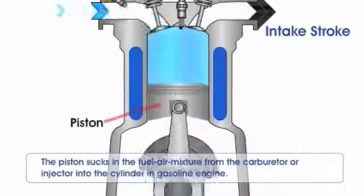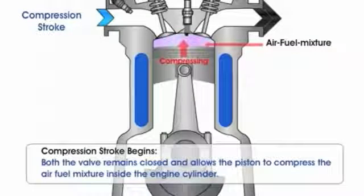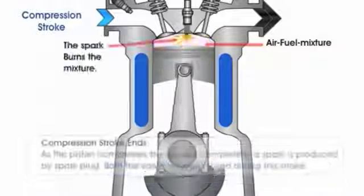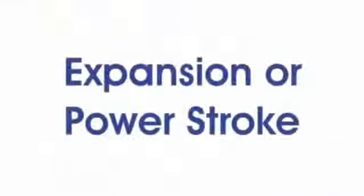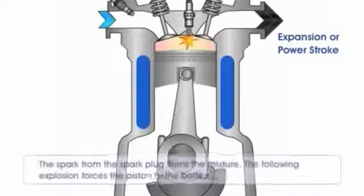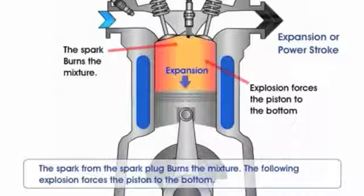Next is the compression stroke. As the piston goes up, it compresses the air and fuel. Now that it is compressed, it is ready for the explosion. The spark plug ignites, forcing the piston back down. The piston gets forced down when the explosion happens, as you can see, and turns the crankshaft at the bottom.